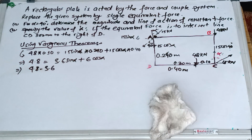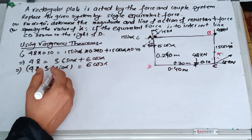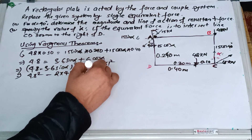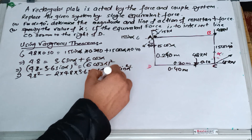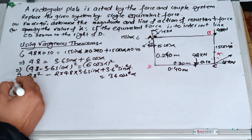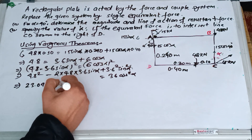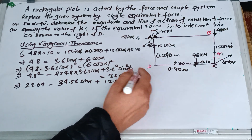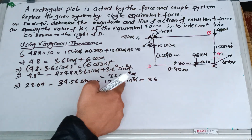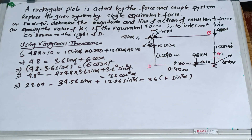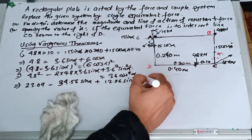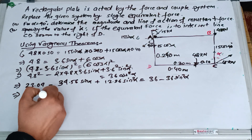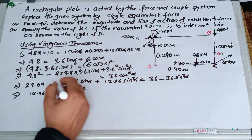Expanding: 4.8 into 3.6 sin alpha, plus 3.6 squared sin squared alpha. Then 4.8 squared minus 2 times 4.8 plus 3.6 squared sin squared alpha times (1 minus sin squared alpha). This term works out to 34.56 sin alpha. And 3.6 squared gives 12.96 sin squared alpha. Combining: 12.96 plus 36 sin squared alpha minus sin squared alpha.